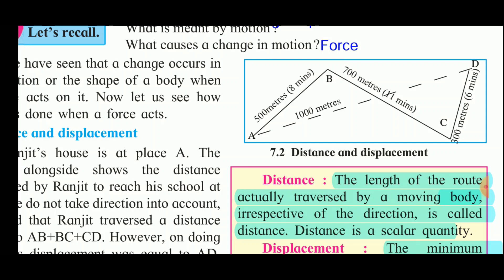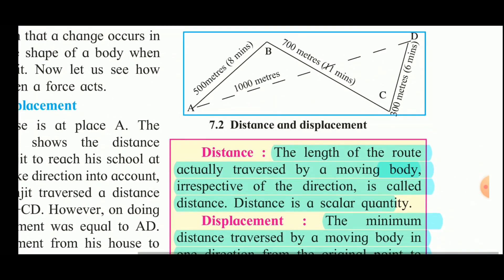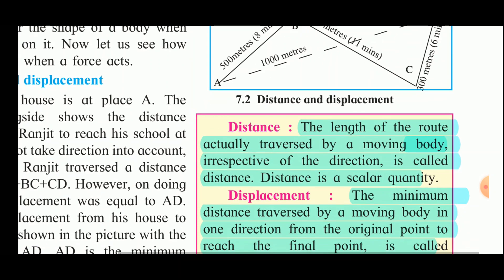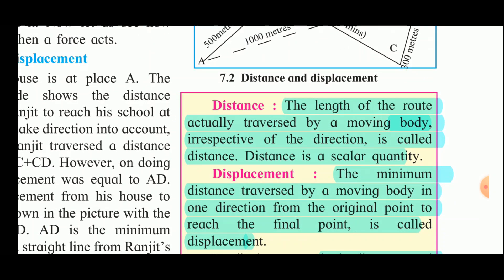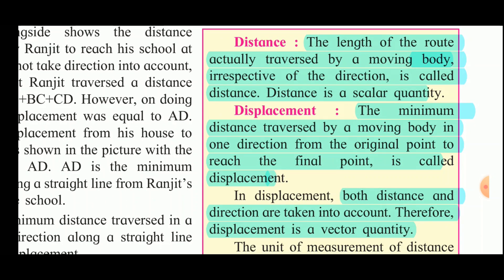Distance is the length of the route actually traversed by the body in moving from one place to another, irrespective of direction. Thus distance is a scalar quantity. The initial position of Ranjit is A and the final position is D. The minimum distance traversed by a moving body in one direction from the original point to reach the final point is called displacement. In displacement, both distance and direction are taken into account. Therefore displacement is a vector quantity.